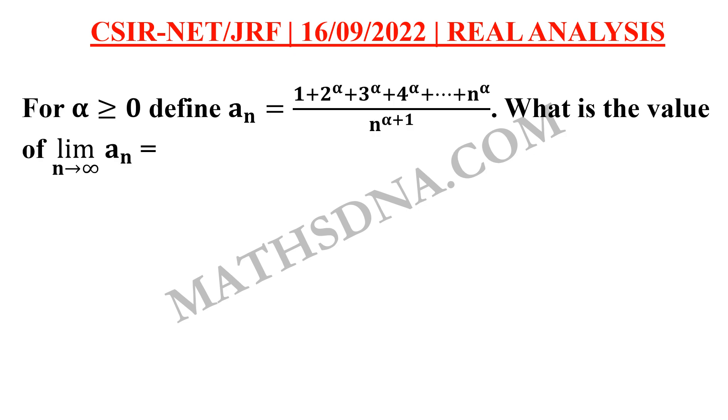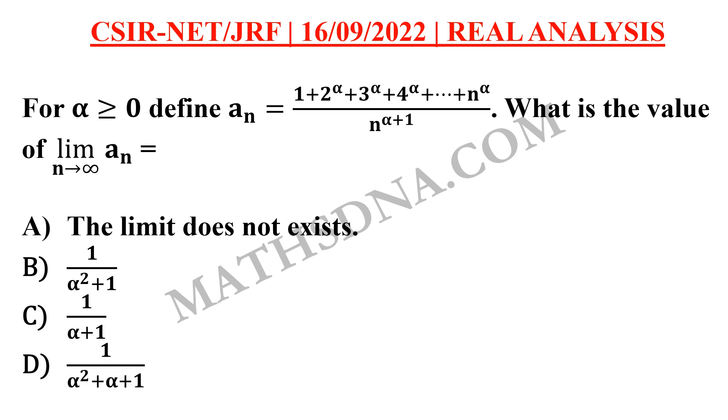Moving on to the question. The question is, for alpha greater than or equals to 0, define a_n equals to 1 plus 2 raised to alpha plus 3 raised to alpha plus 4 raised to alpha to n raised to alpha divided by n raised to alpha plus 1. What is the value of limit n tends to infinity a_n and the options are given to us as: a) the limit does not exist, b) 1 upon alpha square plus 1, c) 1 upon alpha plus 1, and d) 1 upon alpha square plus alpha plus 1.